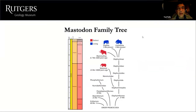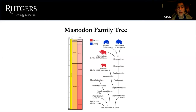Here's the mastodon family tree. Going back 60 million years to the erytherium, the first red branch is the mastodon, which went extinct about 10,000 years ago. The mammoth lived longer, only going extinct about 3,600 years ago. The two blue branches are the living elephants we still have today.